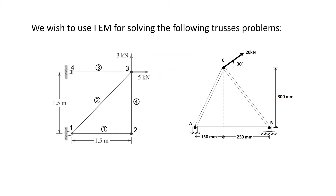We wish to use the finite element method for solving the following truss problem. In the first example, we have a four-member truss problem, while in the second example, we have a three-member truss problem. Unlike the 1D bar problem, where we only have one displacement — either in the X or Y direction — in the truss problem, the displacement can occur in both directions, X and Y.